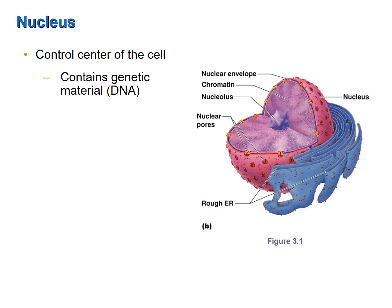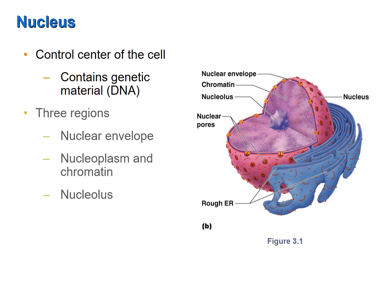Recall that the DNA contains the code, or the recipe, for all of the proteins that a cell makes. The nucleus itself is composed of three regions: the nuclear envelope, the nucleoplasm — where the chromatin is located — and the nucleolus.